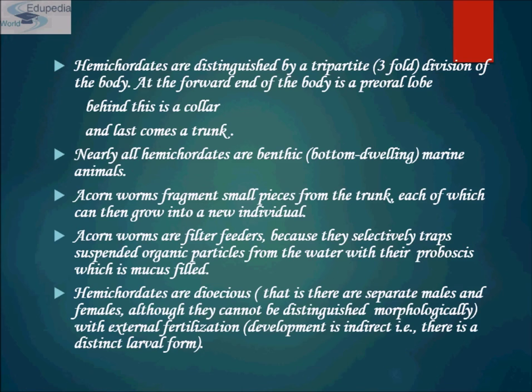Corn worms are filter feeders, selectively trapping suspended organic particles from the water with their proboscis, which is mucus-filled. Hemichordata are dioecious in nature — there are separate males and females — although they cannot be distinguished morphologically. Fertilization is external and development is indirect, meaning there is a distinct larval form.